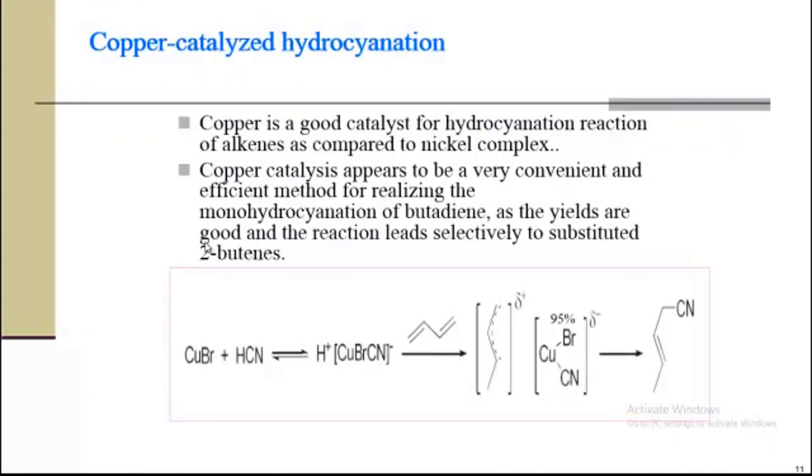Second is copper-catalyzed hydrocyanation. Copper is a good catalyst for hydrocyanation reaction of alkyne as compared to nickel complex, because two problems arise in nickel complex. Copper bromide reacts with HCN to give an adduct product, an intermediate. After that we will add diene, that is butadiene, and a π-allyl complex will be formed. After that, substituted alkyl-nitrile will be formed.